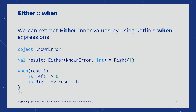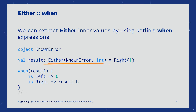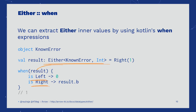We can extract Either's inner values by using when expressions. In this case, you can see how the result value, being of type Either<NonError, Int>, can be easily placed in a when expression, and then we can branch out logic based on the left and right cases.